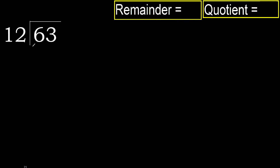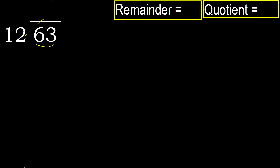63 divided by 12. 6 is less, therefore take the next digit. 63 is not less than 12, therefore find which number, when multiplied by 12, is nearest to 63 but not greater. 12 multiplied by 6...